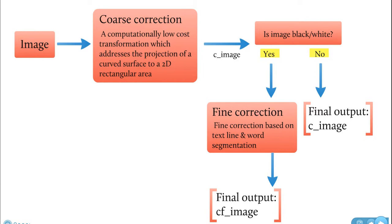But when you use the black and white image, it also does the fine correction and gives you as final output CF image, so that is a coarse plus fine correction image.